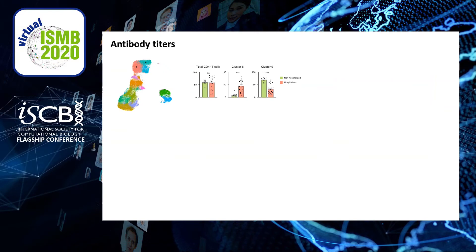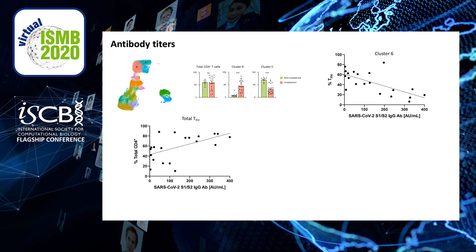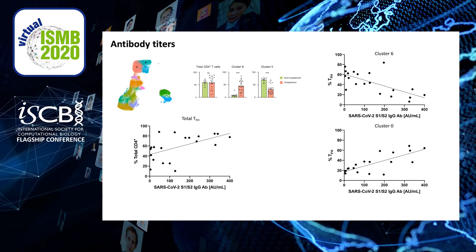In addition to CD4 T cell data, we also had antibody titers from each donor. When we look at the total frequency of TFH in relation to antibody concentration, the higher the frequency of this subset the higher the concentration of antibodies in the circulation. However, if we split cluster 6 and cluster 0, we can see that a high frequency of TFH in cluster 6 negatively correlates with antibody concentration, whereas for cluster 0 a high proportion correlates with higher antibody concentration. So not only do we see the unconventional profile of these T follicular helper CD4s at the transcriptomic level, but we can link this apparent dysfunction to the production of antibodies directed against elements of SARS-CoV-2.